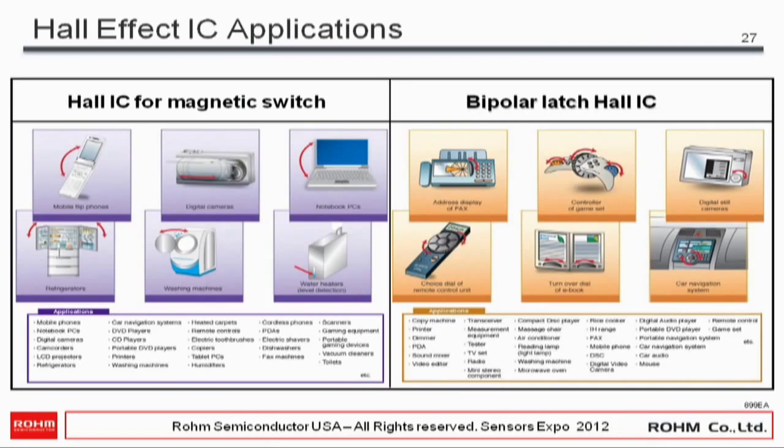Hall effect ICs have typical applications in open/closed lid detection for tablets. For phones, a Hall effect sensor could be used for the main on/off button. A bipolar latch Hall IC enables dial-type applications — this could be a new form of UI for e-readers, allowing users to scroll through pages with a thumbwheel rather than swiping. It's cheap, reliable, and non-contact mechanical.